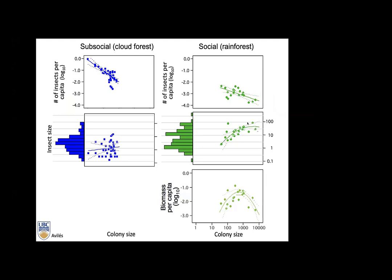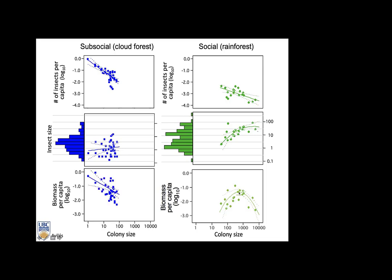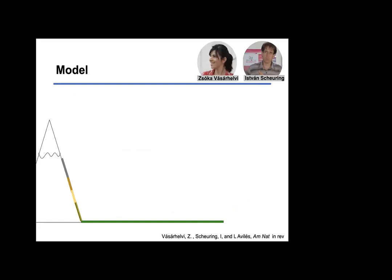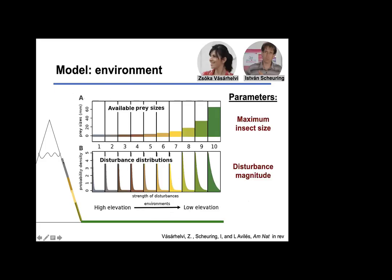However, in the lowland tropical rainforest, where large insects are available, spiders can cooperatively capture increasingly larger insects as colony size increases. The product — fewer but larger insects — means biomass per capita peaks at some intermediate colony size. At higher elevations where large insect size classes are missing, biomass per capita declines with colony size, peaking around 100 individuals, which would explain why sub-social spiders disperse before producing a new generation. These are the patterns we wanted to reproduce in a simulation model.